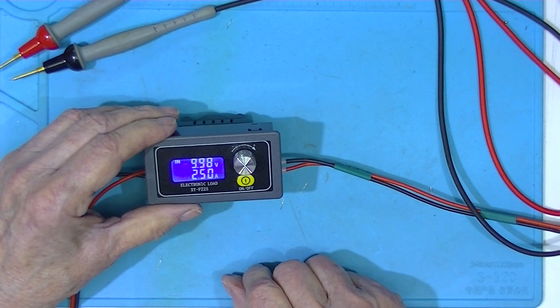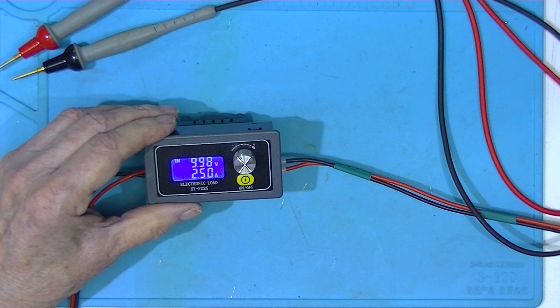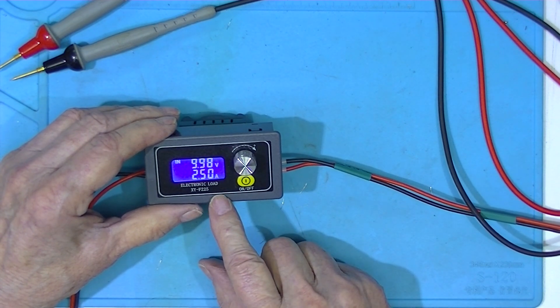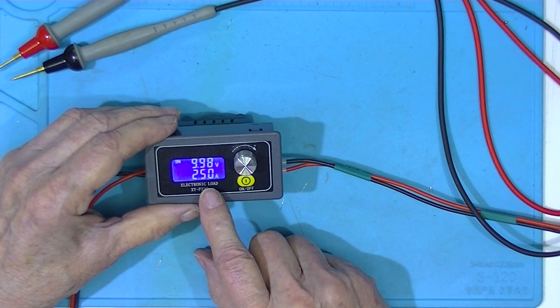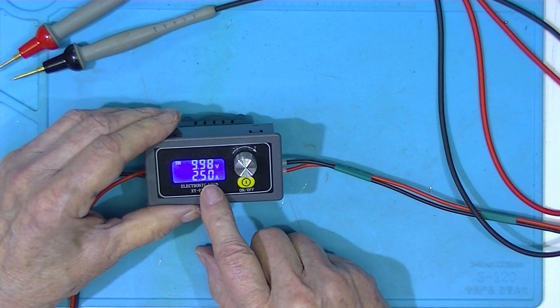That is drawing 2.5 amps. This is a 25 watt electronic load. And it's shutting down over power at 25 watts.